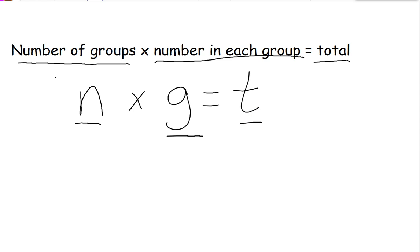For example, if I have a huge auditorium and there are 15 rows of chairs, or 15 groups, and I times it by the number of chairs, let's say there's 20 chairs in each row, so that's the number in each group, my total would be 300 chairs.